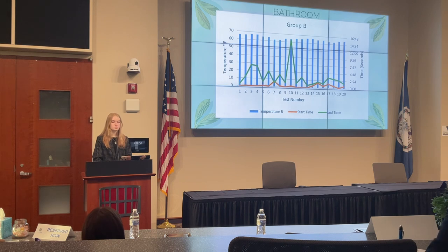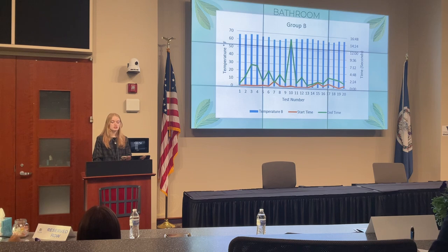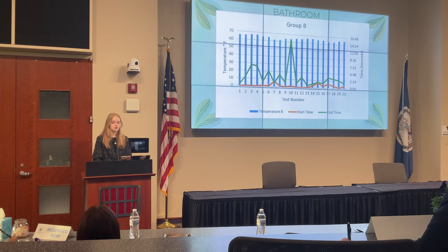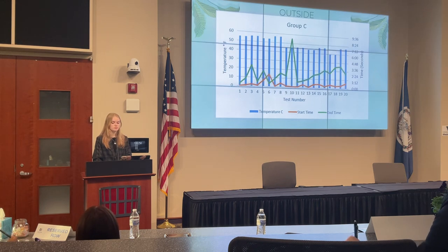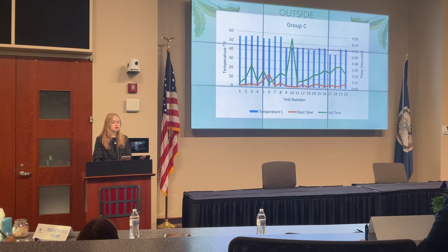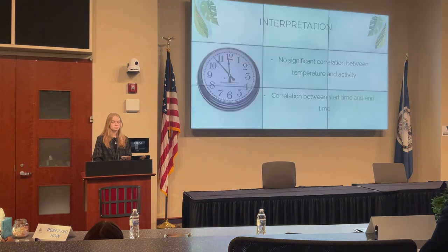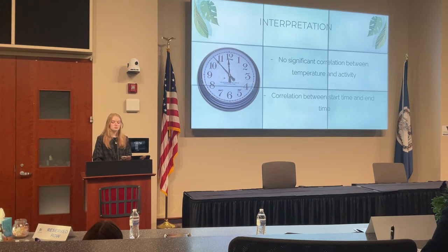This chart represents the group of beetles that was inside my house, where they were exposed to the most stable environment. This allowed me to evaluate whether the temperature affected the beetles' activity levels, or if their activity levels just varied that much on a regular basis. Looking at this chart, there seems to be no real correlation between the temperature and the activity levels. This chart represents the experimental group that was placed outside. As you can see, there is more variance in temperature, but still no real correlation between the temperature and the activity levels of the beetles.